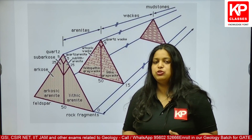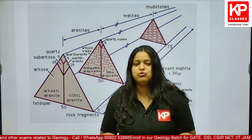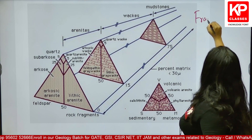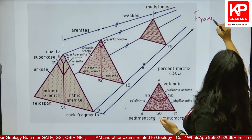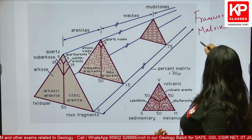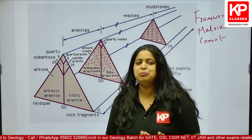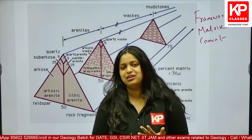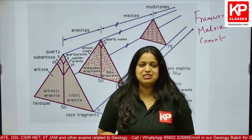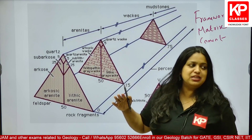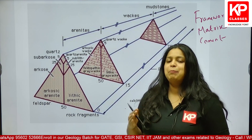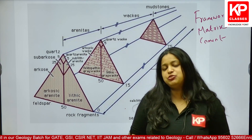Classification of sandstone is based on two different factors. First, we classify sandstone based on matrix content. The particles in sandstone are divided into framework grains, matrix, and cement. Framework grains — quartz, feldspar, and rock particles — are the major constituents. Matrix is the clay-sized particle present in the sandstone. If matrix content is more than 15%, we call the sandstone a wacke; if matrix content is less than 15%, the sandstone is called an arenite.